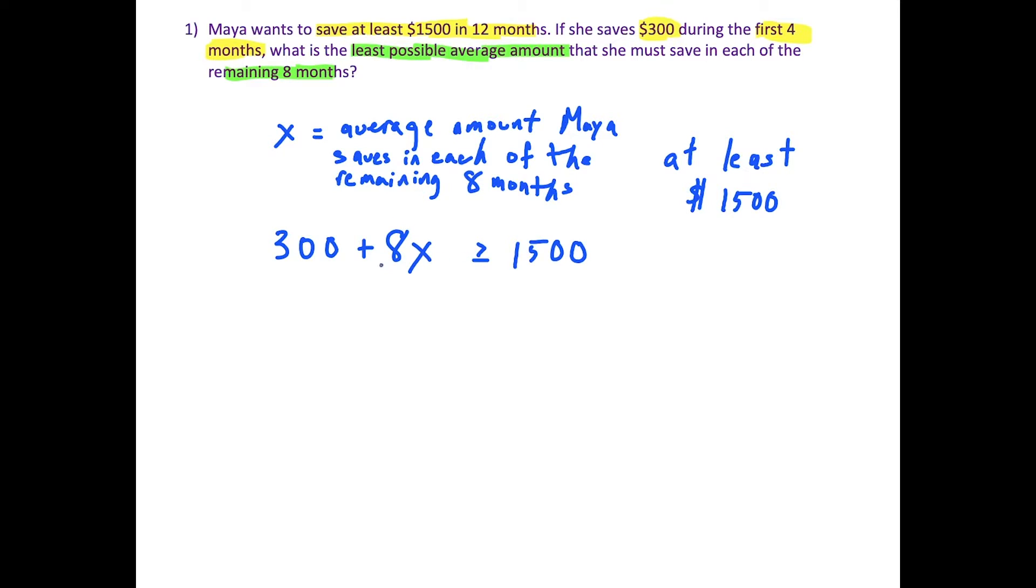To solve this question here, all we have to do is solve the inequality. We're going to subtract 300 on both sides. Now we've got 8x is greater than or equal to 1200. Then to solve for x, we're just going to divide both sides by eight. Now this simplifies to x is greater than or equal to 150.